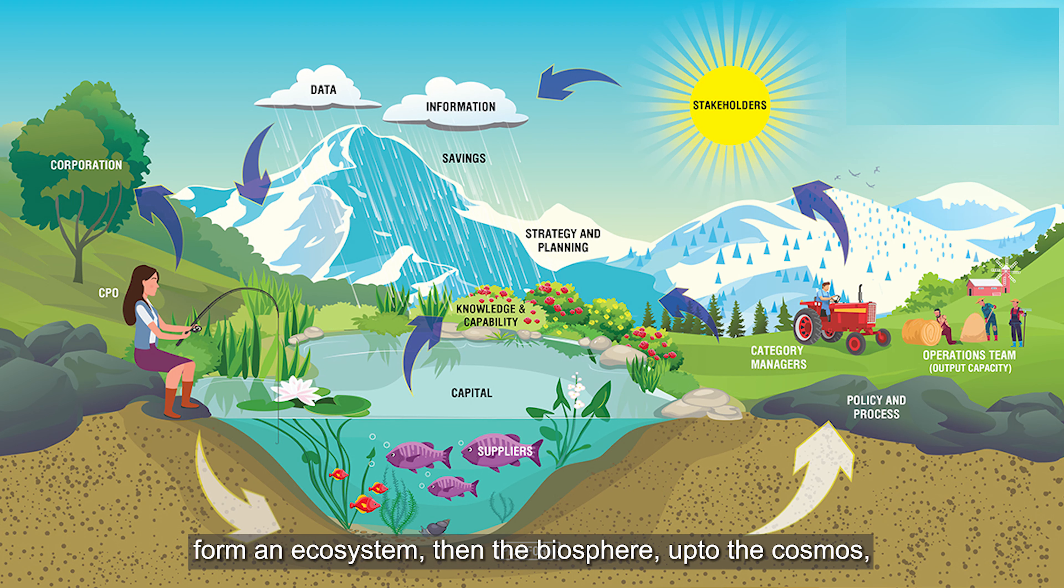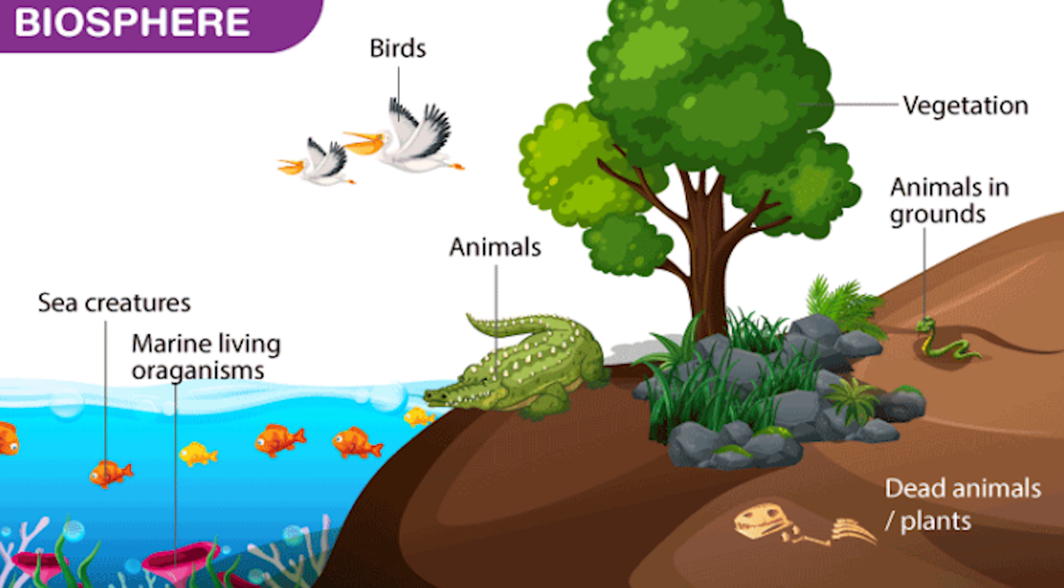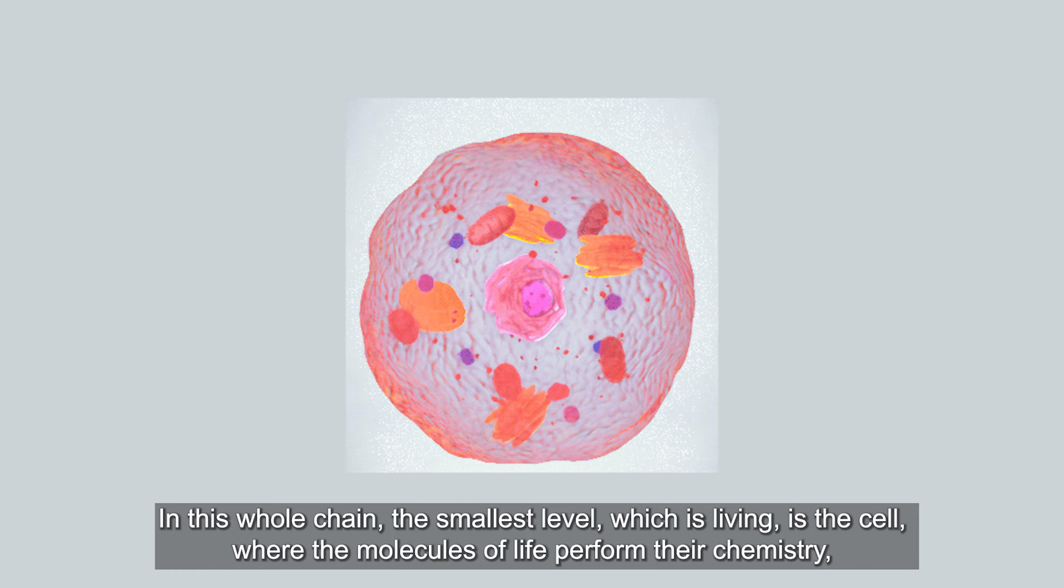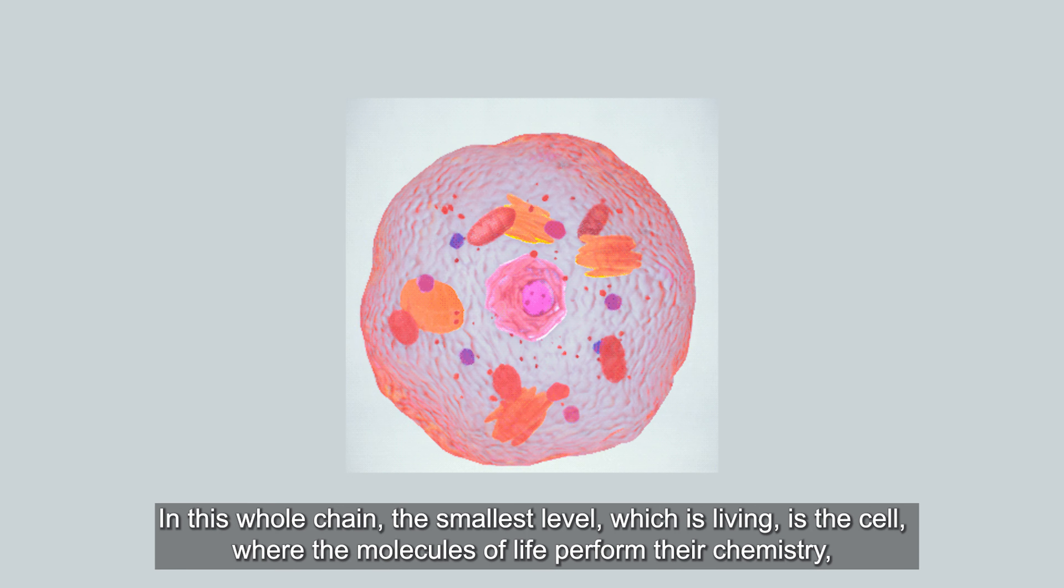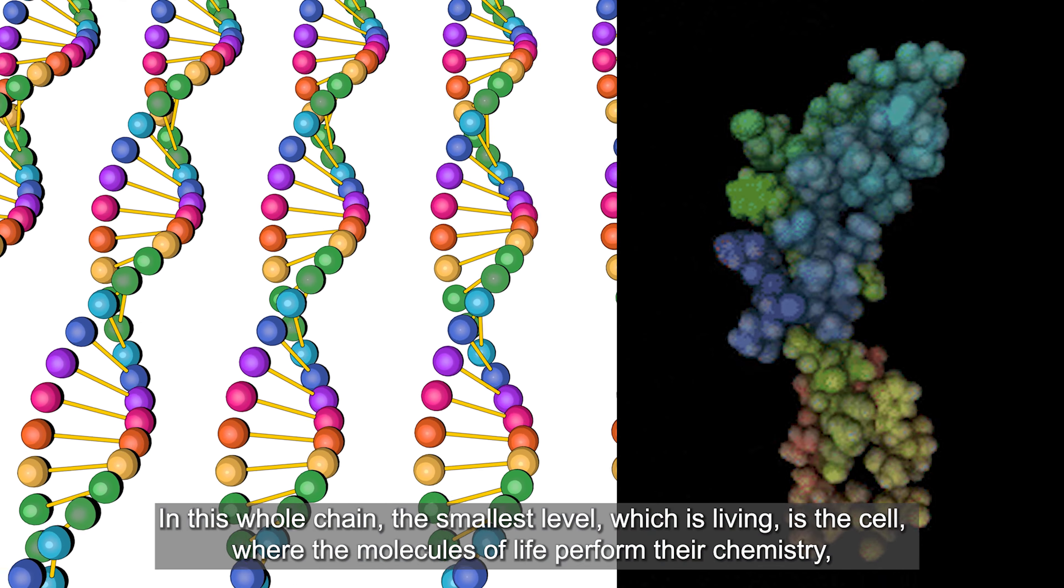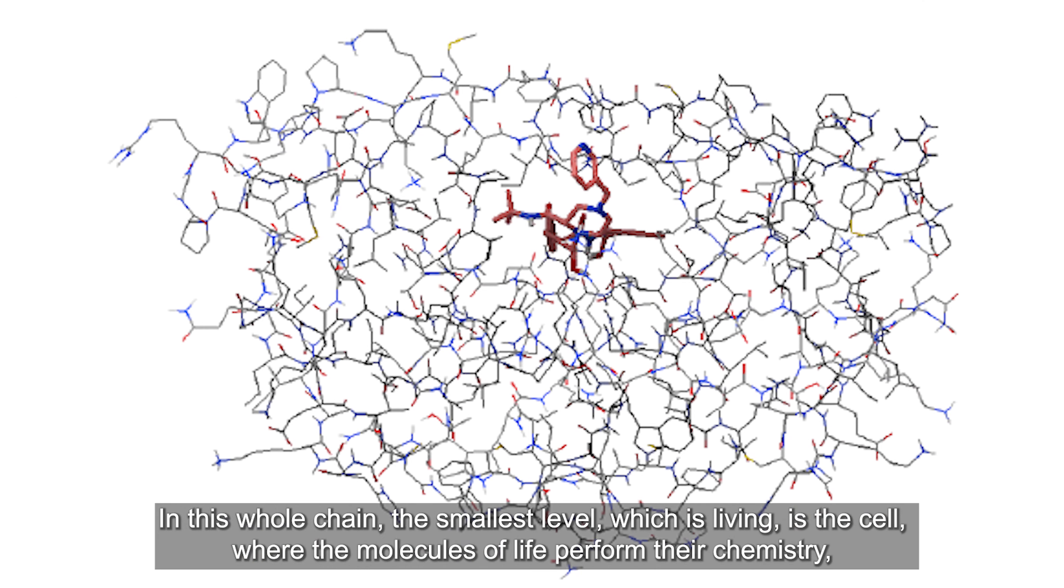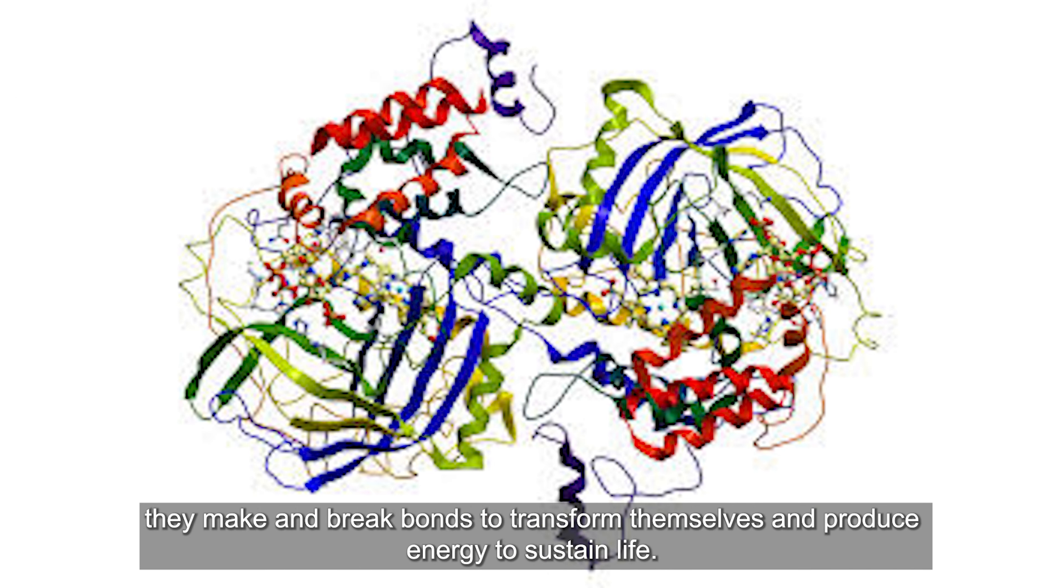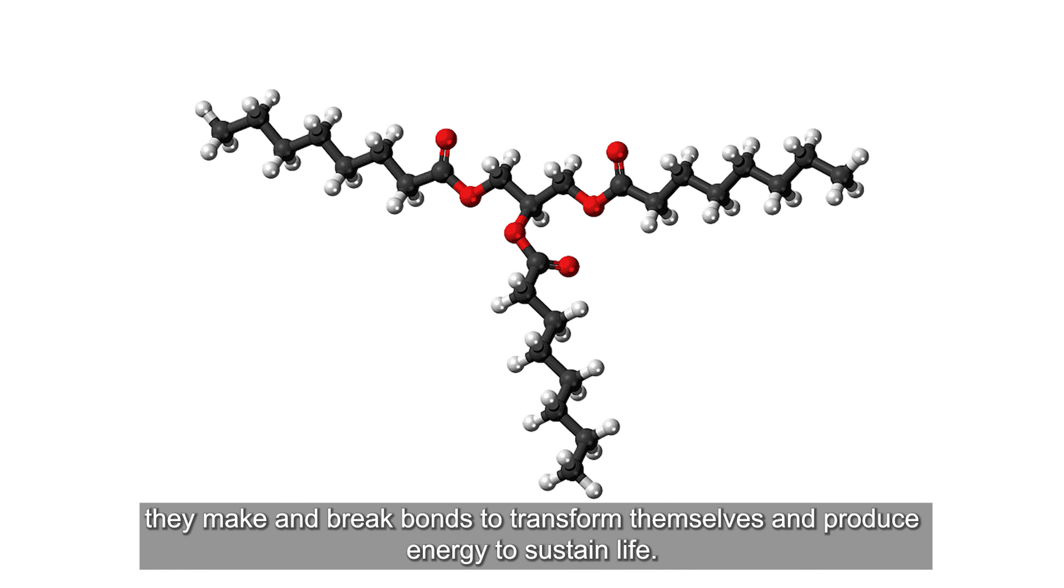Together we make up a population. A population makes communities which when interact with each other form an ecosystem, and then the biosphere. And in this whole chain, the smallest level which is living is the cell.